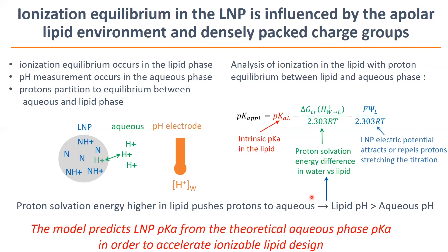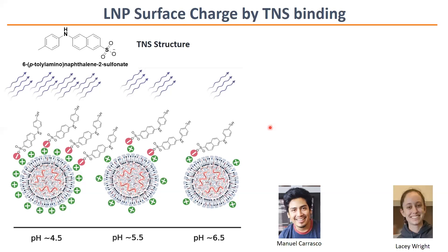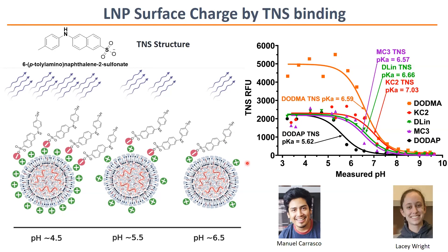We made the LNPs and analyzed them — the work of graduate students Manuel Carrasco and Lacey Wright. We analyzed by TNS, which is a negatively charged aromatic compound that enhances its fluorescence upon binding a positively charged lipid interface. That binding is enhanced when the lipid is more positive at lower pH, providing a measurement of LNP surface potential — not the net charge, but the charge at the surface. You see fluorescence increase down to about pH 6, and then it generally stops, except for DODAP which has a very low pKa. So TNS is not sensitive to changes below pH 6 and measures surface potential.